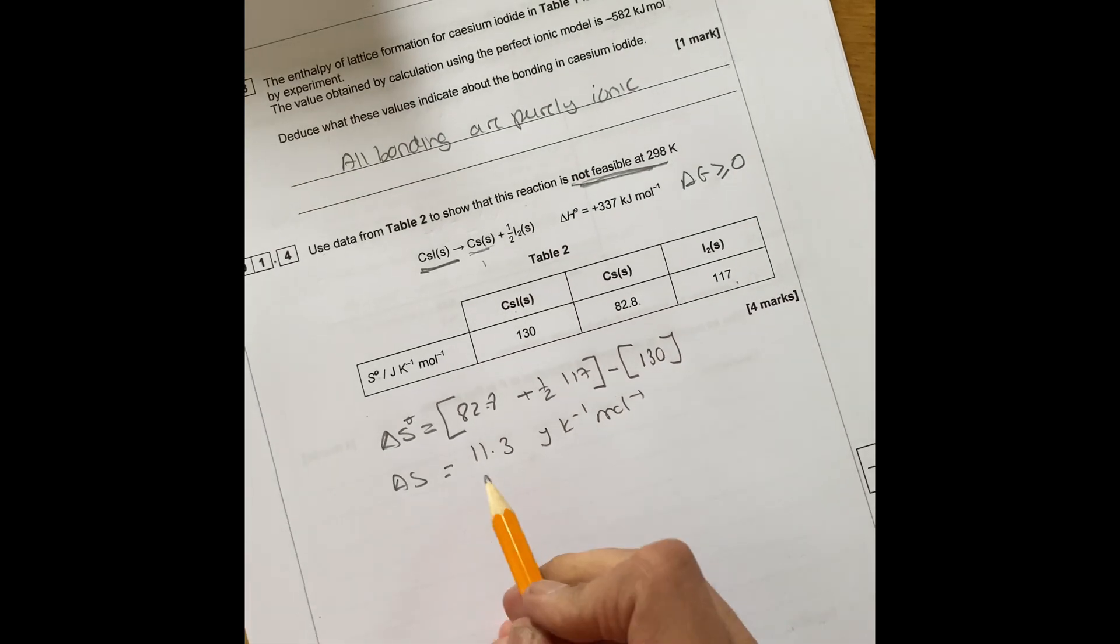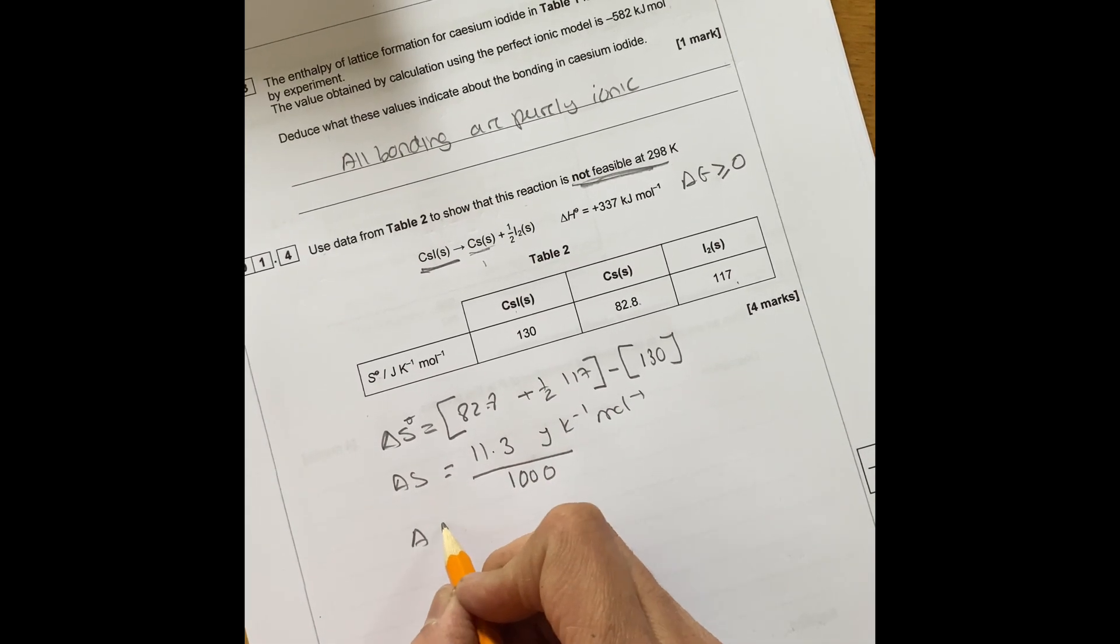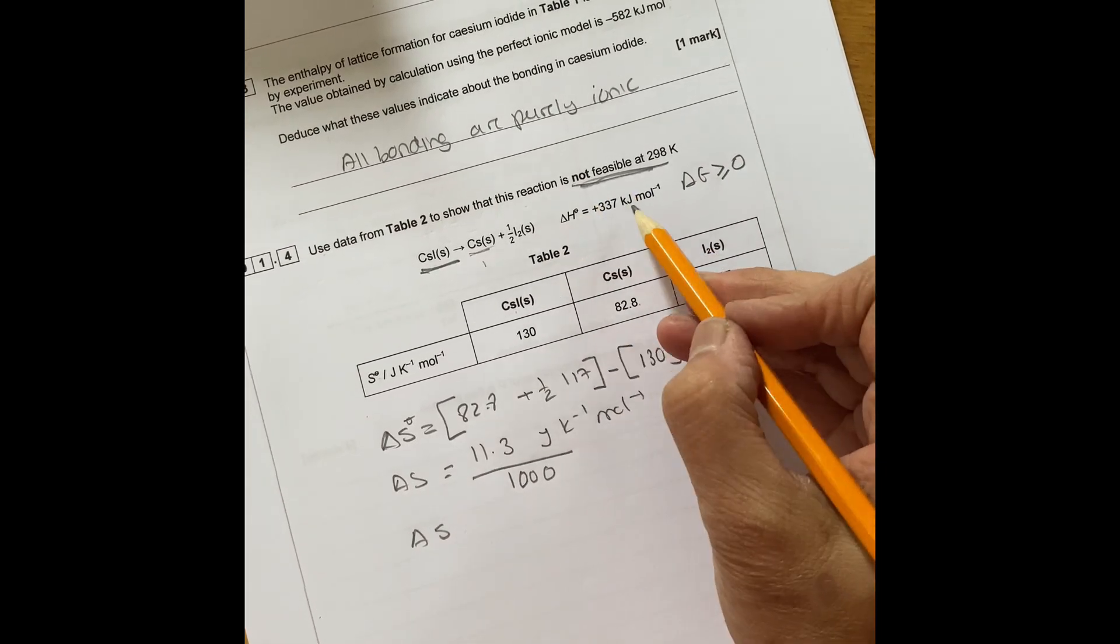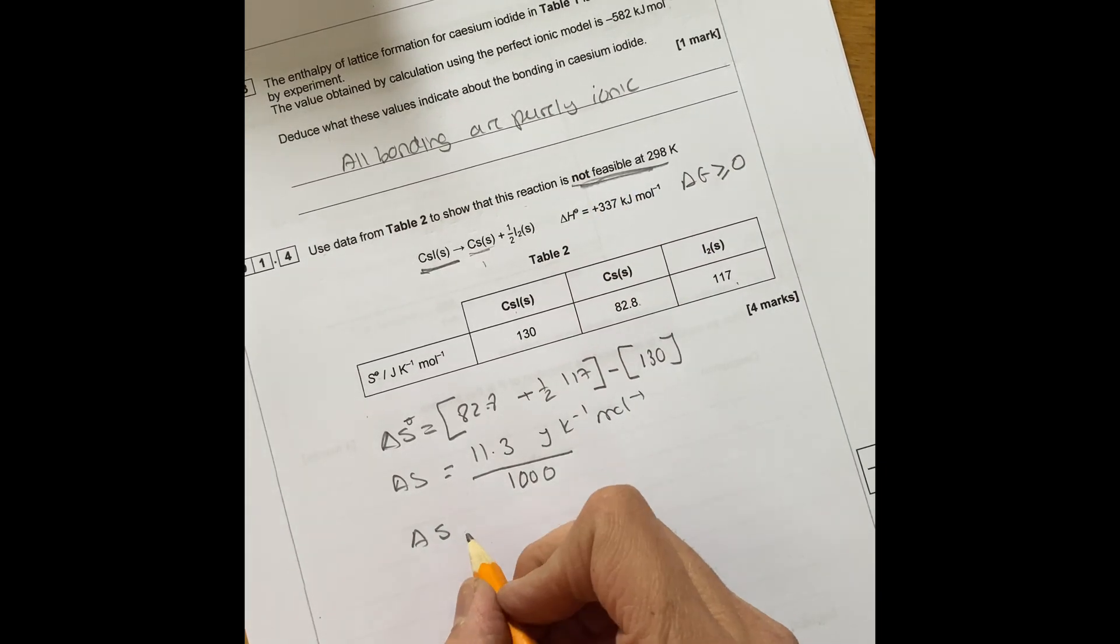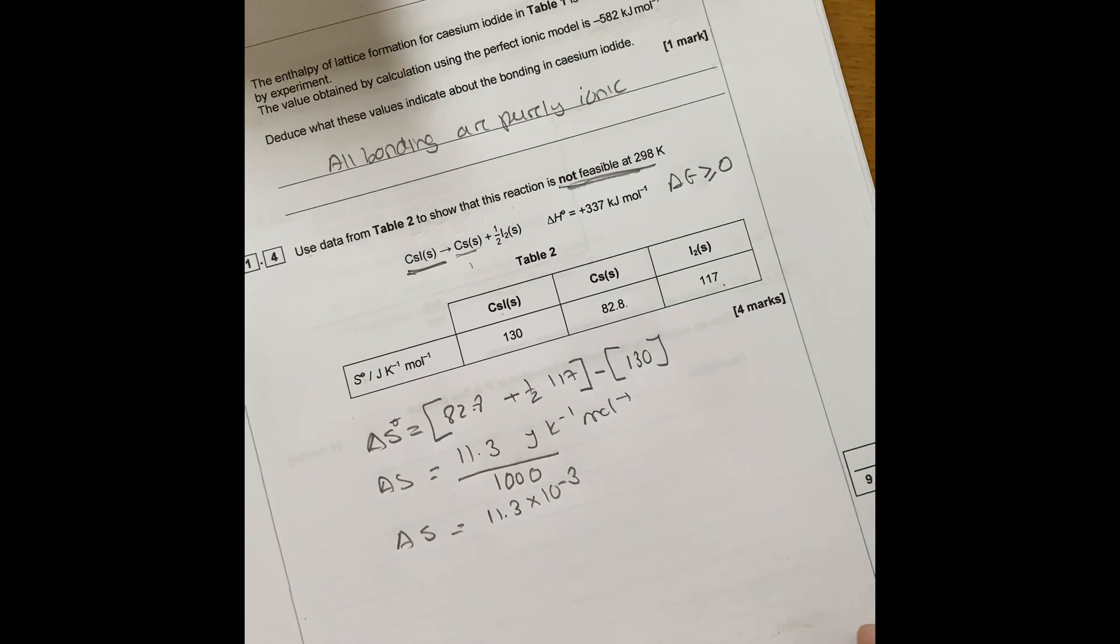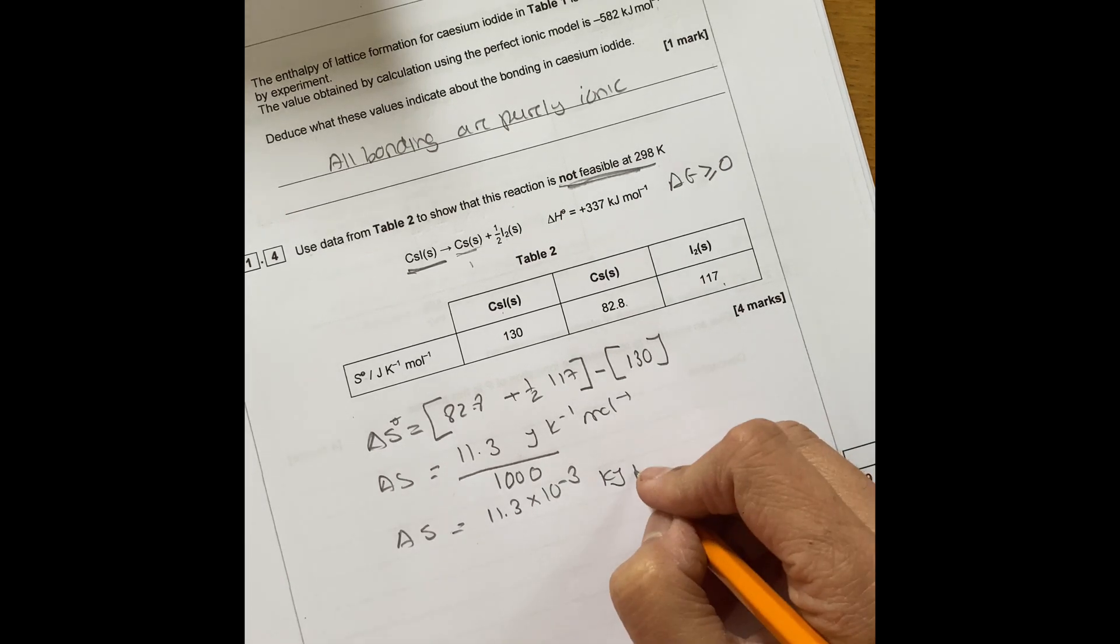We need to change this, divide by a thousand to get into kilojoules because we need to work in kilojoules. So that's going to be 11.3 times 10 to the minus three kilojoules per mole.